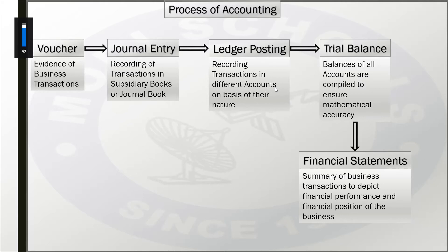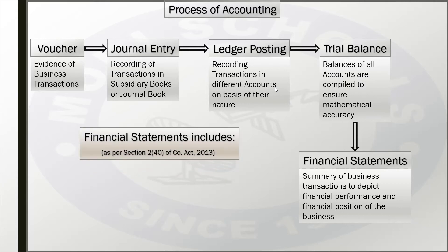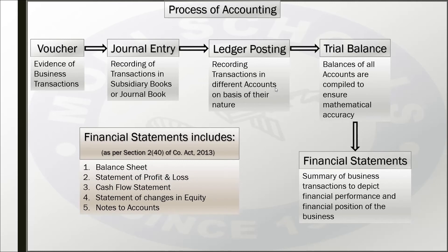Since we are studying company accounts, we will study financial statements of companies. The components of financial statements are given in the Companies Act 2013, and it is mandatory for all companies to follow it. Under Section 2, Subsection 40, five items are listed: balance sheet, statement of profit and loss, cash flow statement, statement of changes in equity, and notes to accounts. You are already familiar with the balance sheet, statement of profit and loss, and notes to accounts. Cash flow statement will be studied in chapter six, and statement of changes in equity is not in your syllabus.